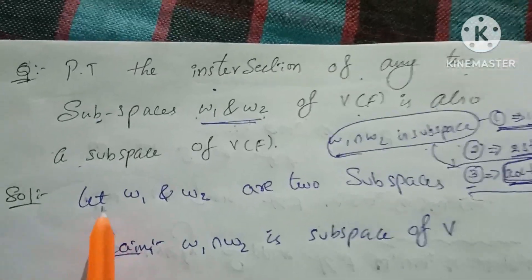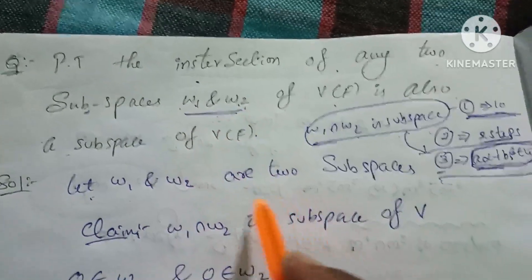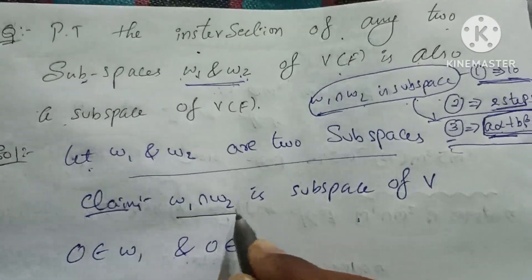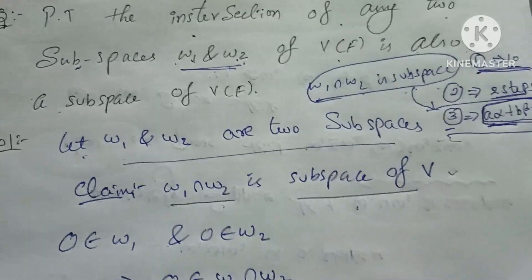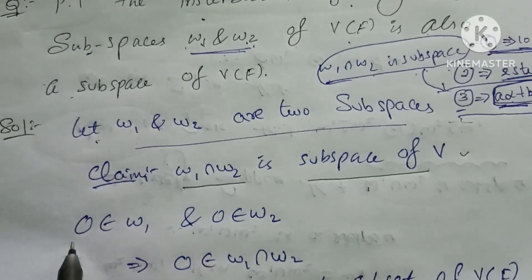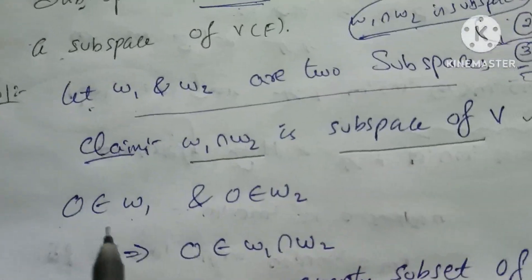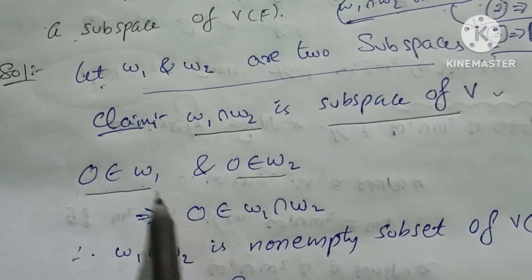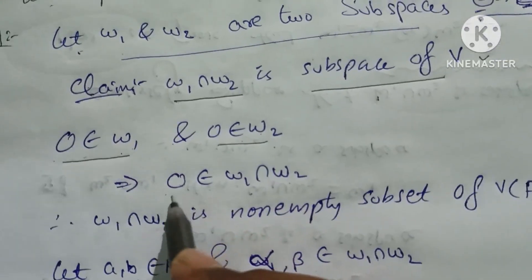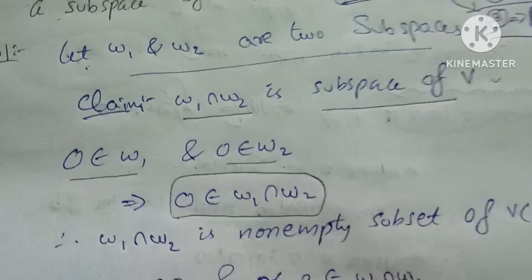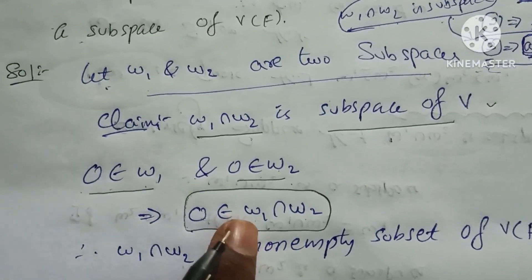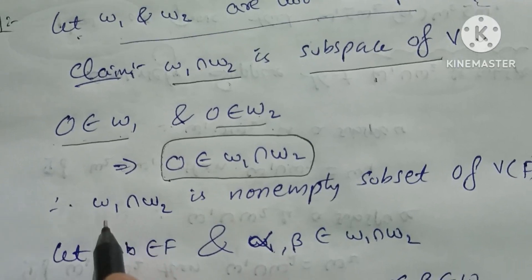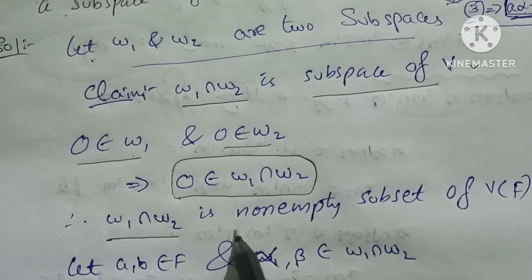Let's look at the solution. What do we know? W1 and W2 are subspaces. We will prove that W1 intersection W2 is also a subspace. The zero vector is in W1 and in W2. So, 0 belongs to W1 and 0 belongs to W2. Therefore, W1 intersection W2 is non-empty.